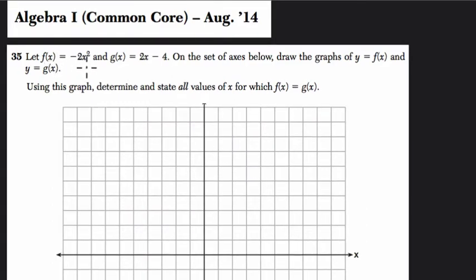Let f of x equal negative 2x squared and g of x equal 2x minus 4. So I notice we have a parabola and a linear equation put together. On the set of axes below, draw the graphs of y equals f of x and y equals g of x.